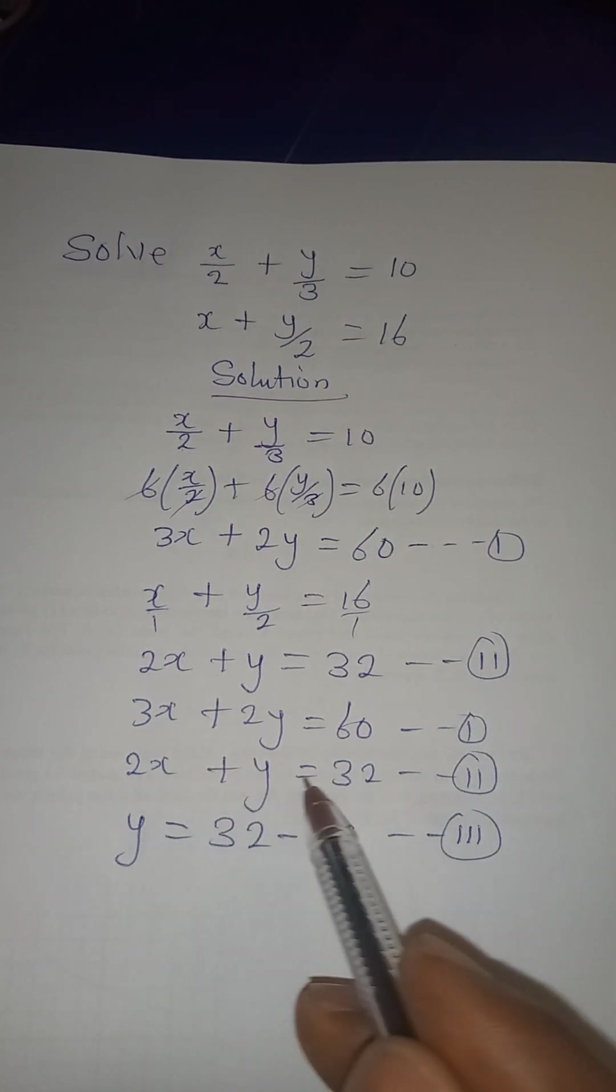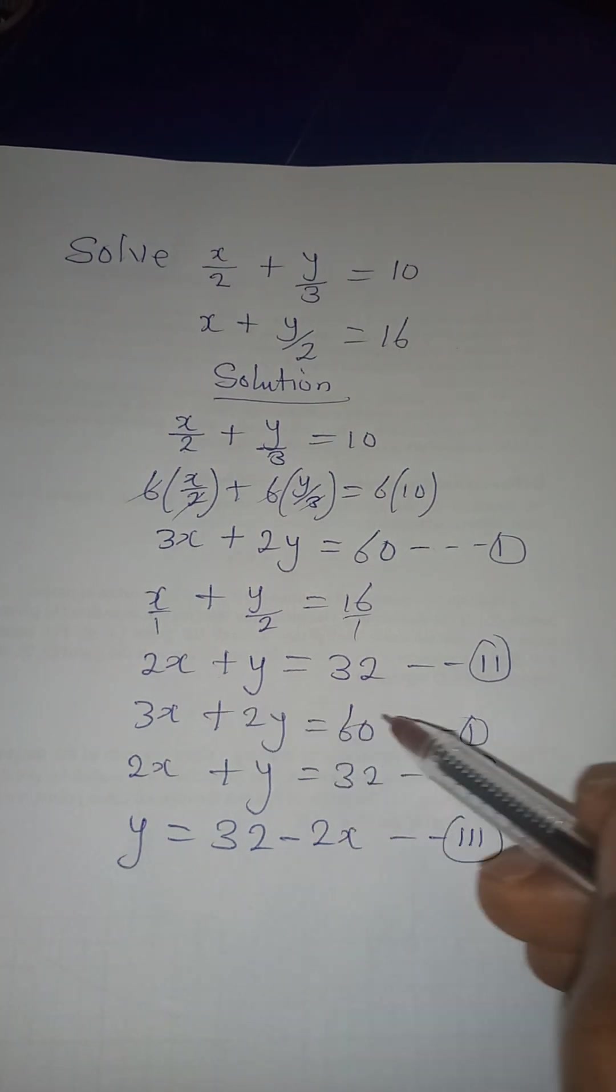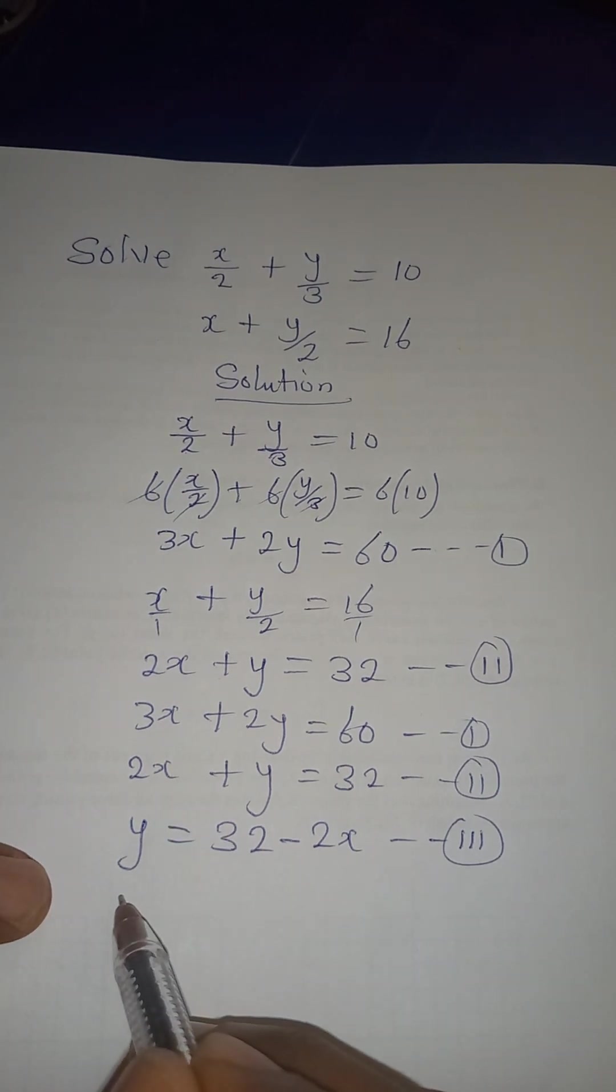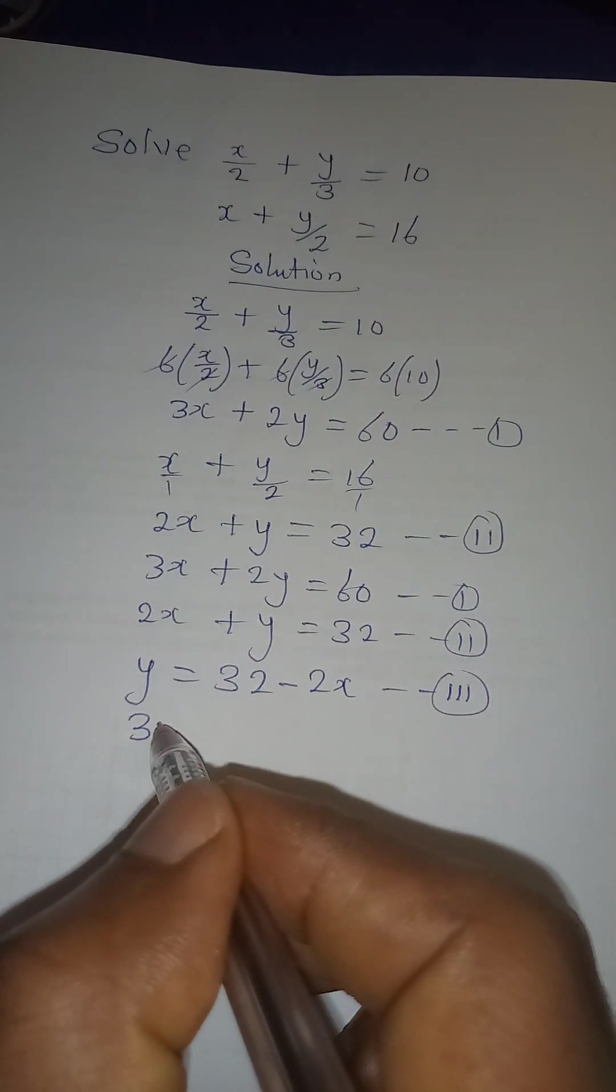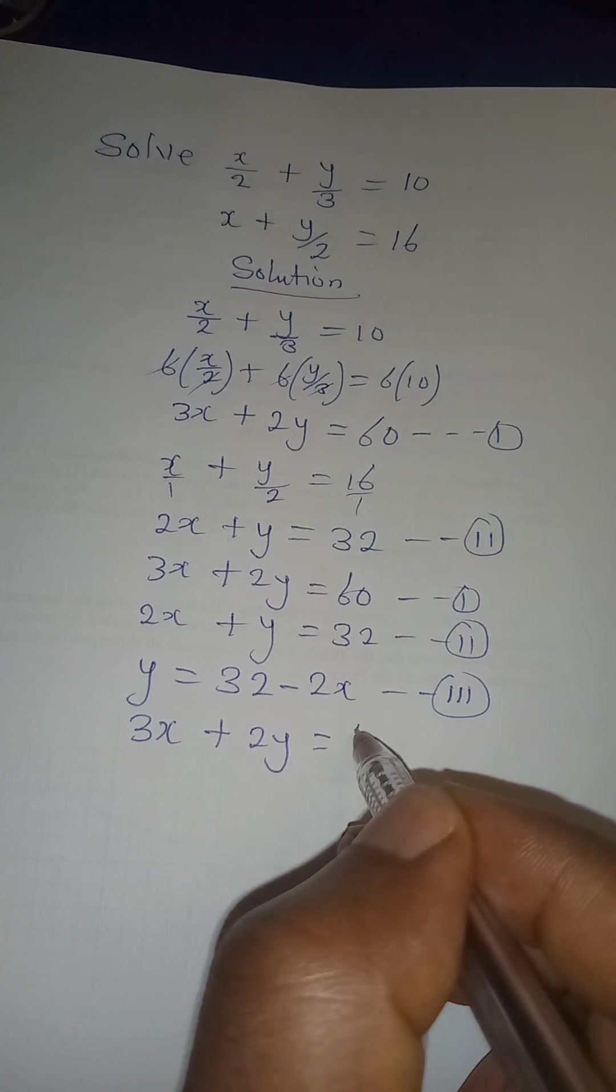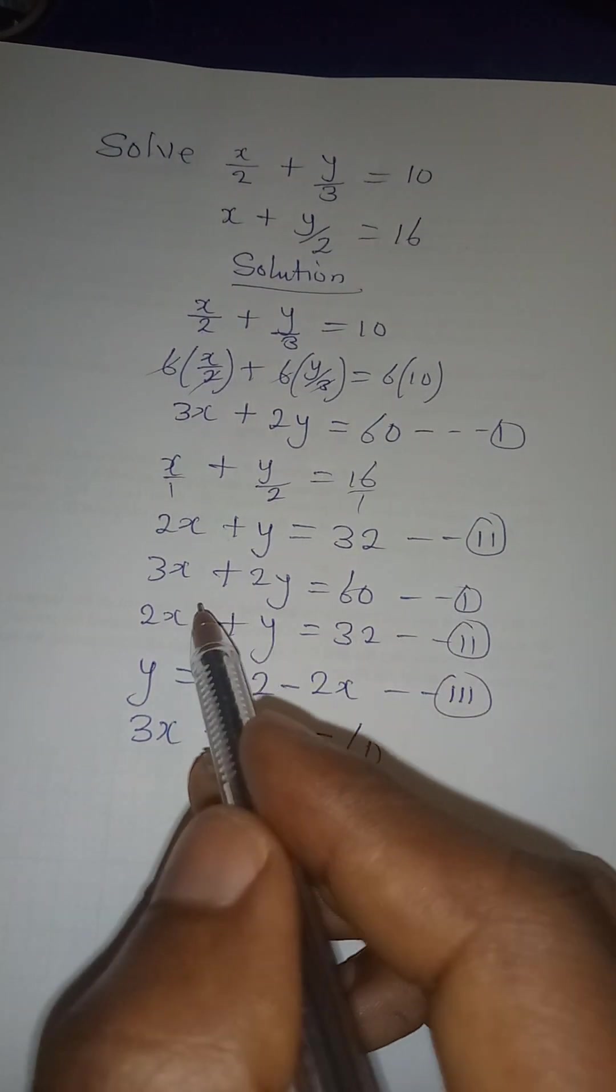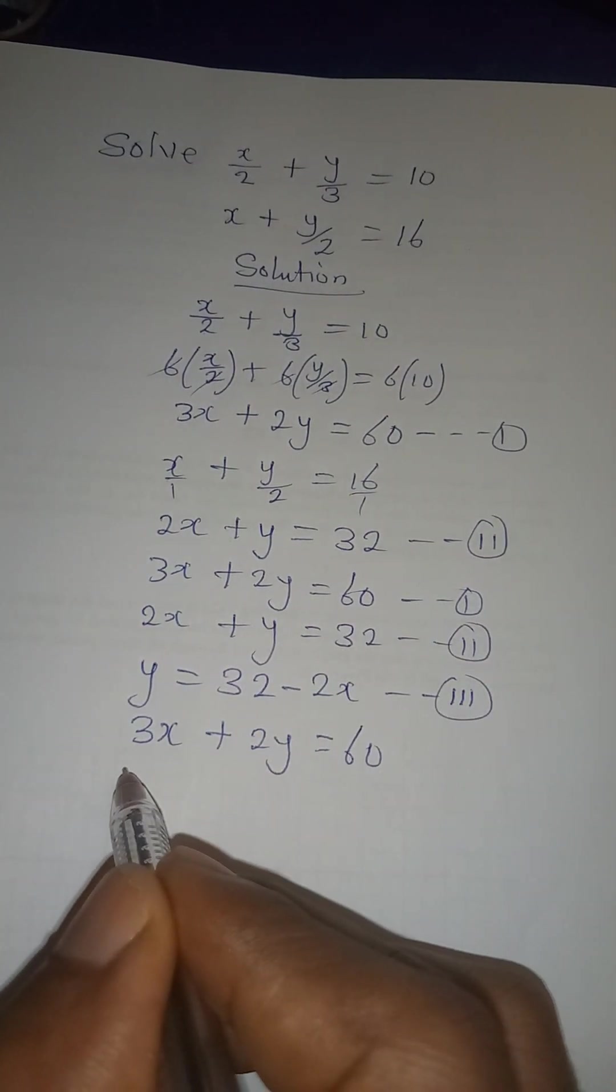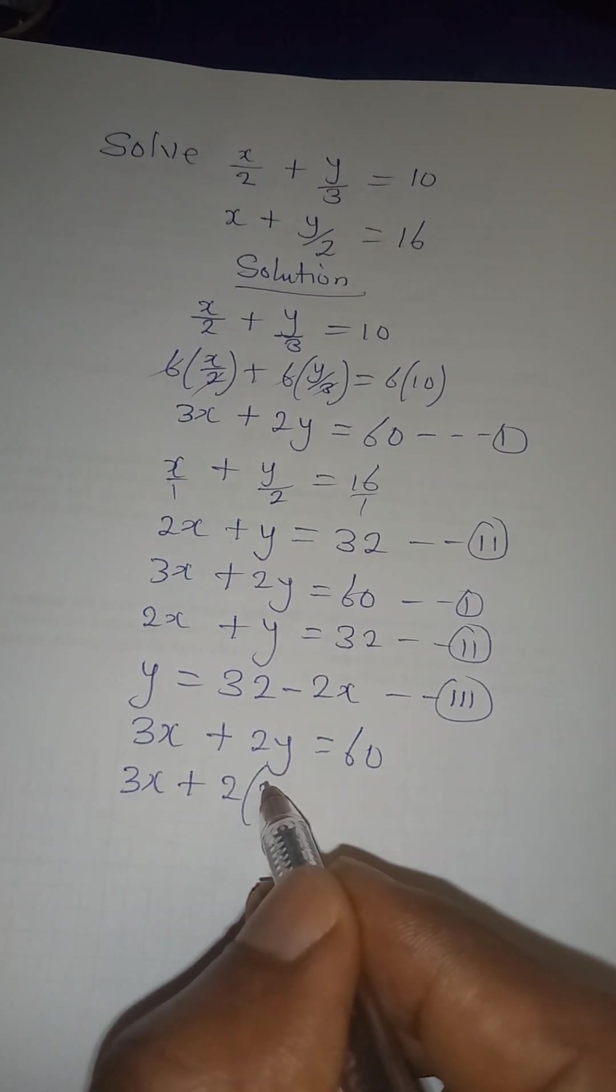So I have equation 1, equation 2, and equation 3. So substitute equation 3 into equation 1. And remember that our equation 1 is still 3x plus 2y equal to 60. So let's substitute. I will have 3x plus 2y is 32 minus 2x, and everything will be equal to 60.